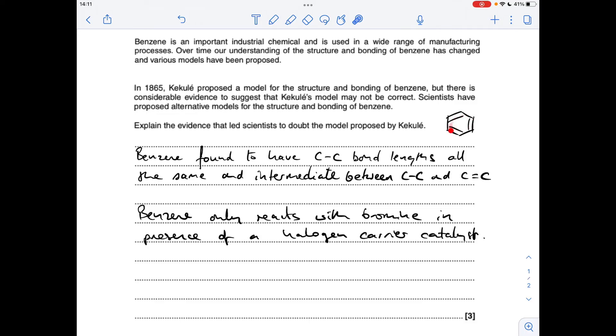So if you think about Kekulé's structure, you've got three carbon-carbon double bonds. So you would expect from that structure that the enthalpy change of hydrogenation to be three times that for cyclohexene, which obviously has the one carbon-carbon double bond.